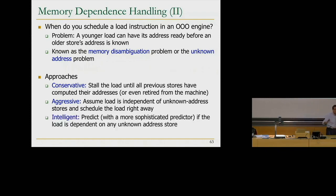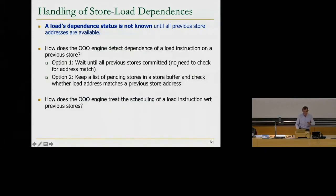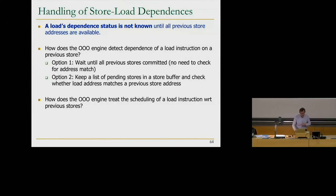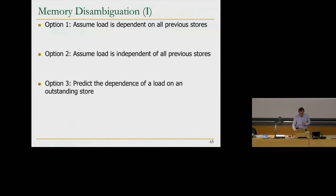There's also an intelligent approach, which pretty much all existing machines employ. You predict with a more sophisticated predictor whether the load is dependent on any unknown-address store. A load's dependent status is not known until all previous store addresses are available. There are two questions: how do you detect the dependence of a load on a previous store, and how do you treat scheduling? You can wait until all previous stores are committed, keep a list of pending stores in a store queue and check for address matches, assume dependence, assume independence, or predict the dependence.